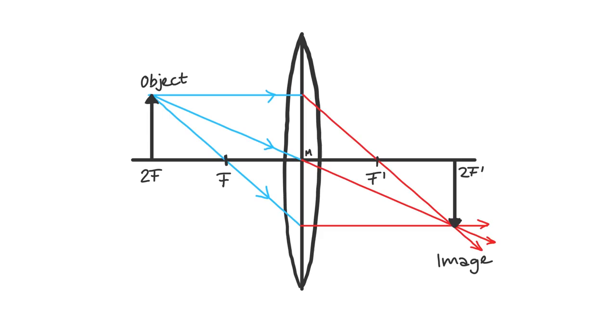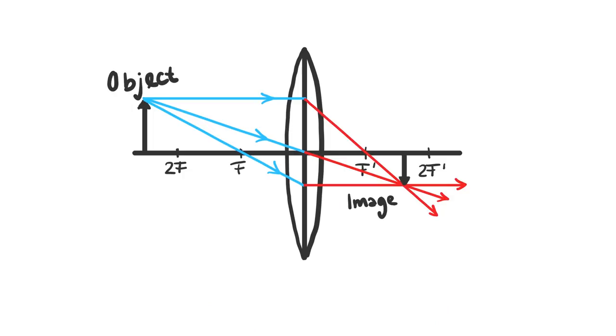If the object stands exactly on 2F, the image has the same exact size as the object. If the object is placed behind 2F, it gets scaled down. Placed between F and 2F, the object gets magnified. There are two special cases.